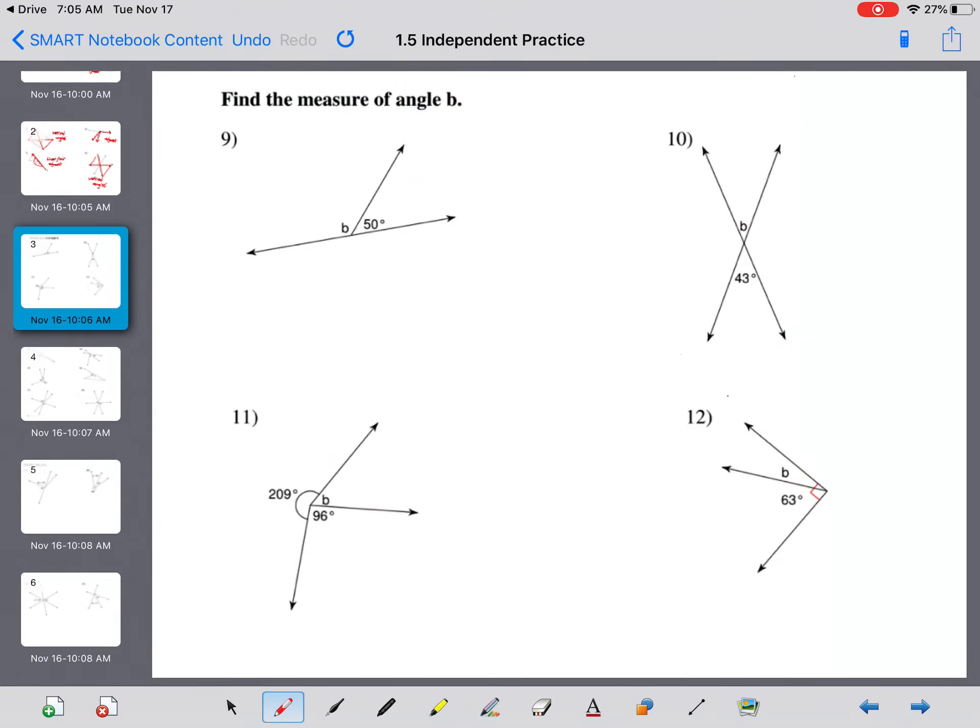Here they say find the measure of angle B. So here we have these two angles, angle B and the one that's 50 degrees, creating a straight line. So B plus 50 equals 180. Minus 50 on both sides. And B equals 130 degrees.